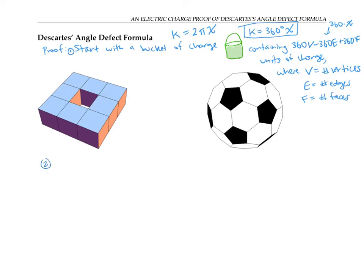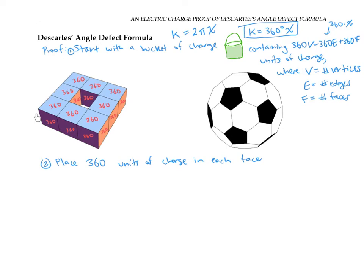Next, I'm going to place 360 units of positive charge in the middle of each face of my polyhedron. So my square torus polyhedron would look something like this — of course, there are other 360s on faces in the back, the bottom, and the inside that we can't see. And my soccer ball should look something like this.